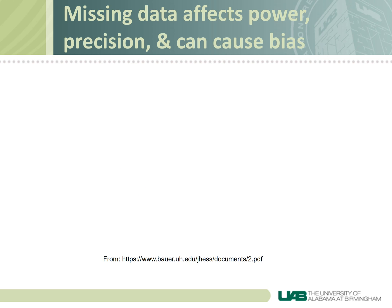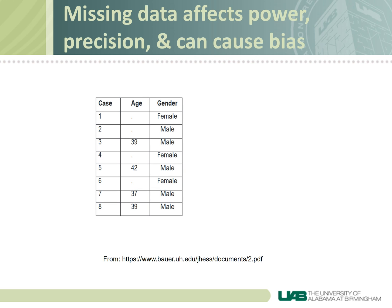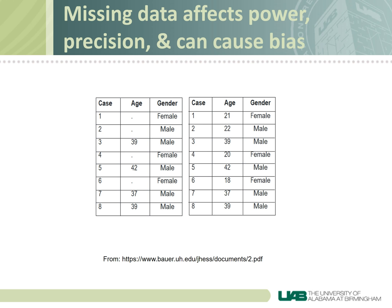Missing data can also lead to a biased estimate of the result of your analysis. This table on the left has some missing data indicated by the dots. If you were to calculate the average age in this table, you'd find that it's 39. The table on the right has all the data present, and if you calculate the average age there, you'll see that it's 29. So we'd have calculated a biased estimate of average age if we excluded the cases with missing data — an important thing to remember.